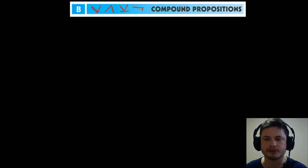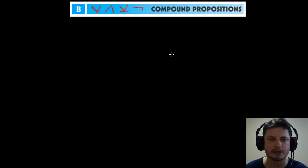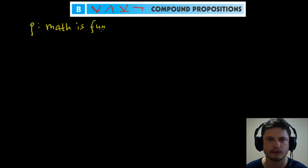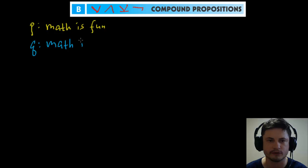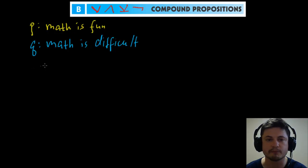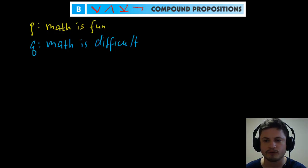Let's start by making two propositions we'll use to build compound propositions. Proposition p will be 'math is fun' — it is fun — and proposition q will be 'math is difficult.' I could add more variables like r, s, and t, but that would make it more confusing, so let's just focus on two first.